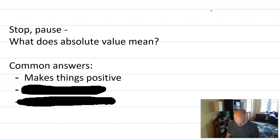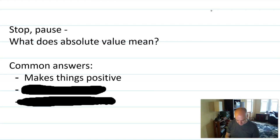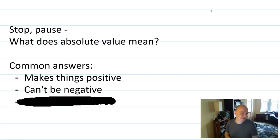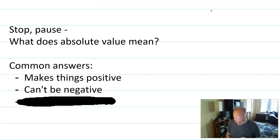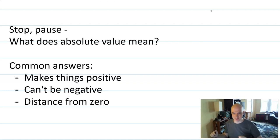Common answer one is that it's something that makes things positive. Common answer two is that it similarly can't be negative. And the thing I hear a lot is people say, aha, I know what the real answer is — it's the distance from zero. The distance from zero of a number is the absolute value.